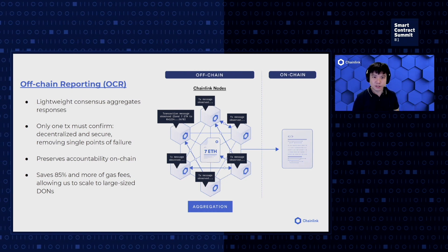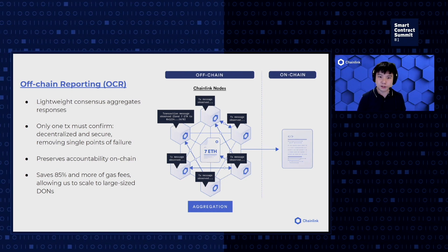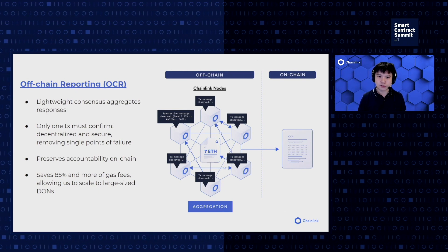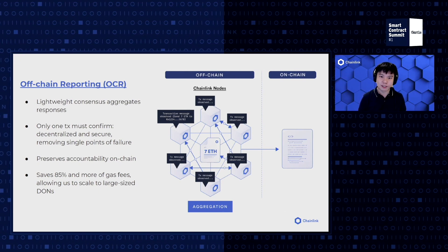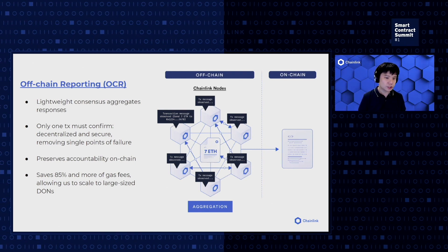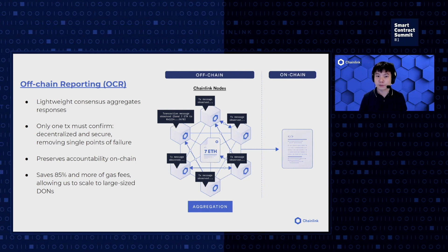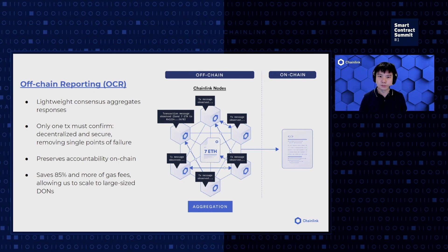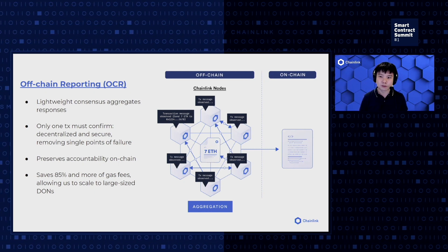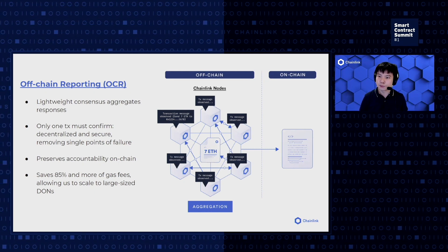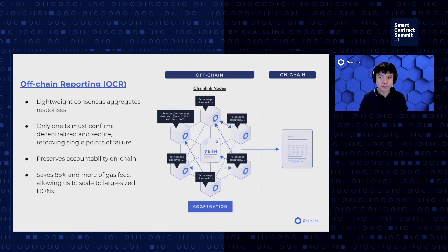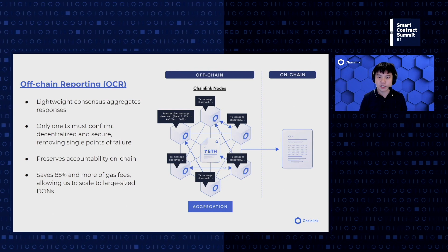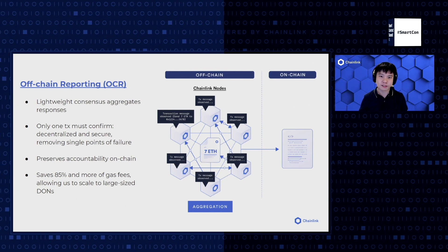Today, OCR 1.0 feeds currently secure about $30 billion in DeFi app TVL. With OCR 2.0, we're going to generalize this capability, allowing for generic computation and enabling cross-chain messaging. Thanks to the scaling properties of OCR 2.0, we're going to be able to add hundreds of high-quality oracle nodes from reputable node operators, and we'll leverage this network to securely validate cross-chain transactions in a tamper-proof way while minimizing gas costs.